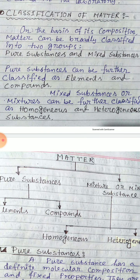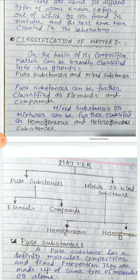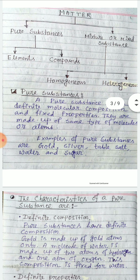On the basis of composition, matter can be broadly classified into two groups: pure substances and mixed substances. Pure substances can be further classified as elements and compounds, and mixed substances or mixtures can be further classified as homogeneous and heterogeneous substances.